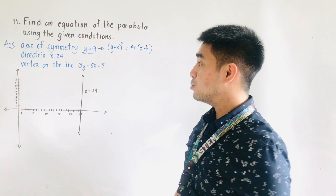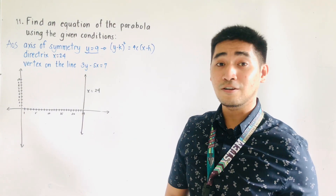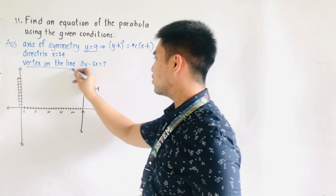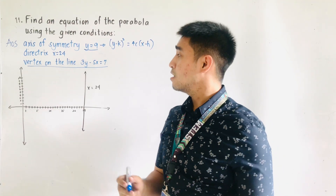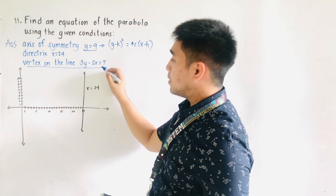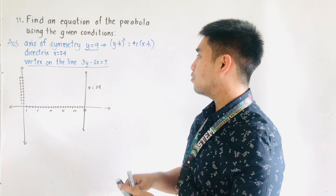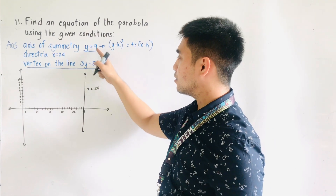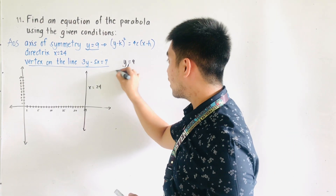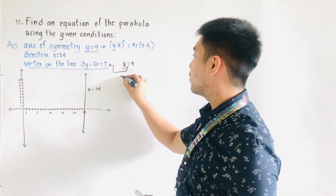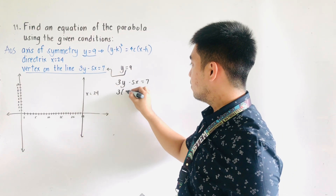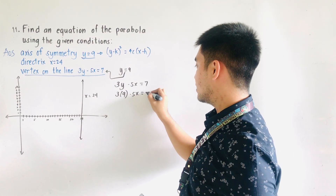For the third condition, we will be using the vertex on the line 3y minus 5x is equal to 7. If you are given this condition — that the vertex lies on the line 3y minus 5x equals 7 — we will use substitution. Since the axis of symmetry is y equals 9, we are given the point y equals 9. Therefore we substitute this y into the equation: 3y minus 5x equals 7 becomes 3 times 9 minus 5x equals 7.